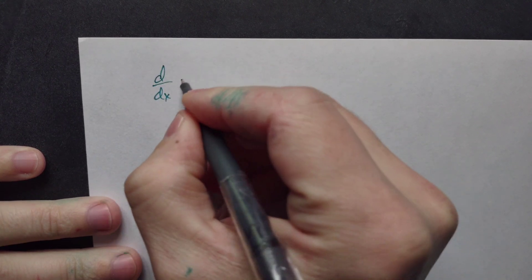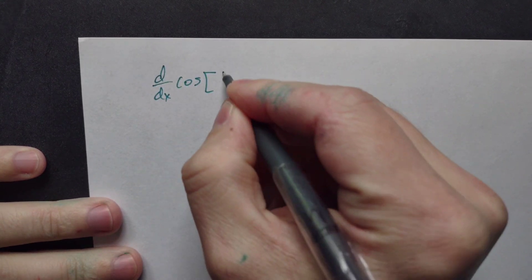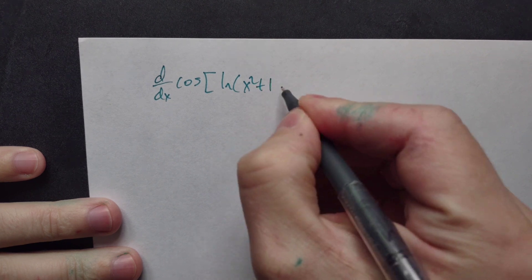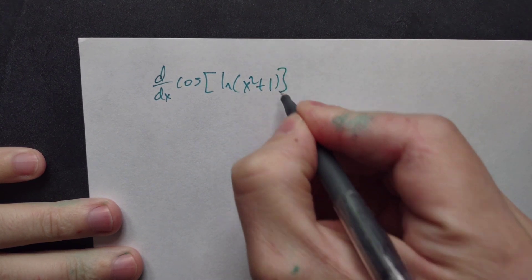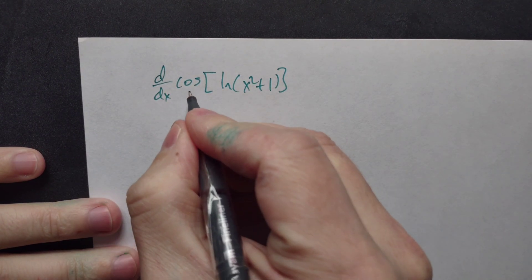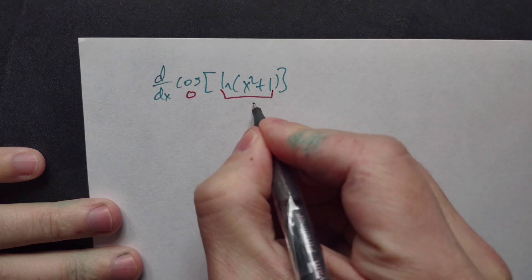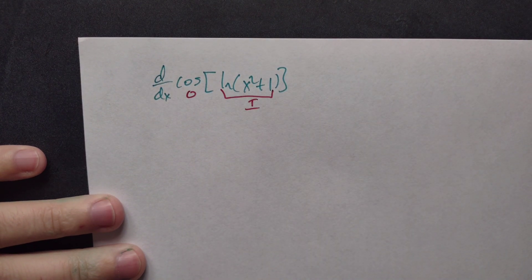Differentiate with respect to x, cosine of ln of x squared plus one. With respect to the cosine, this is your outside, and then this here is your first inside. That means you're going to use a chain rule.